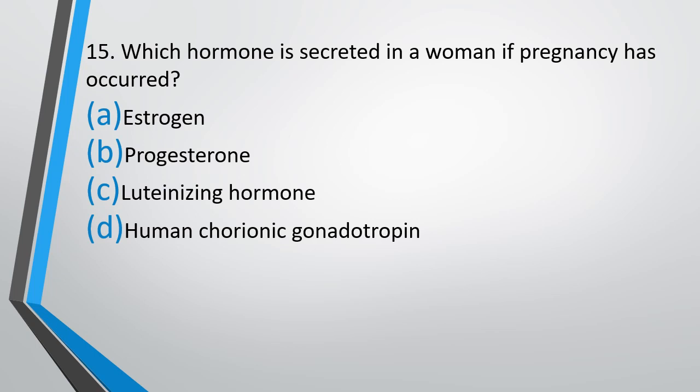Question number 15. Which hormone is secreted in a woman if pregnancy has occurred? Estrogen, progesterone, luteinizing hormone, or human chorionic gonadotropin.